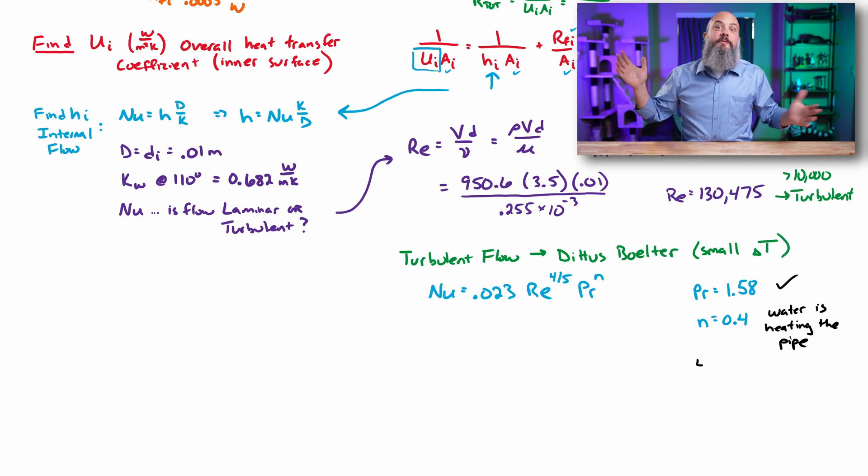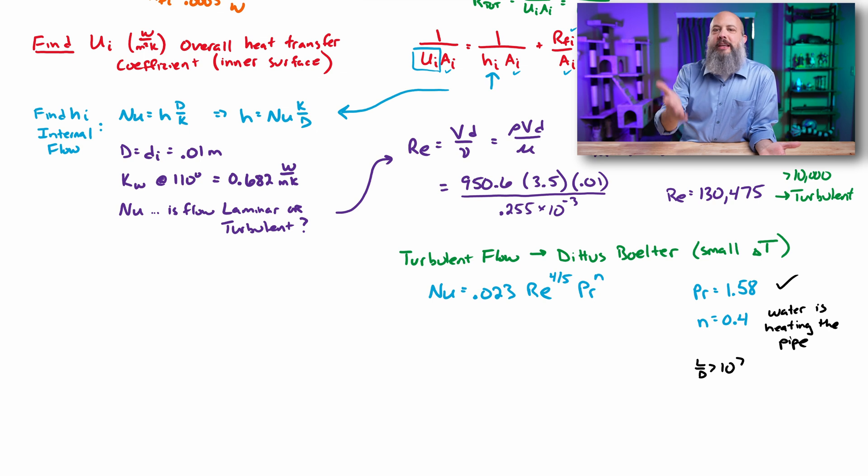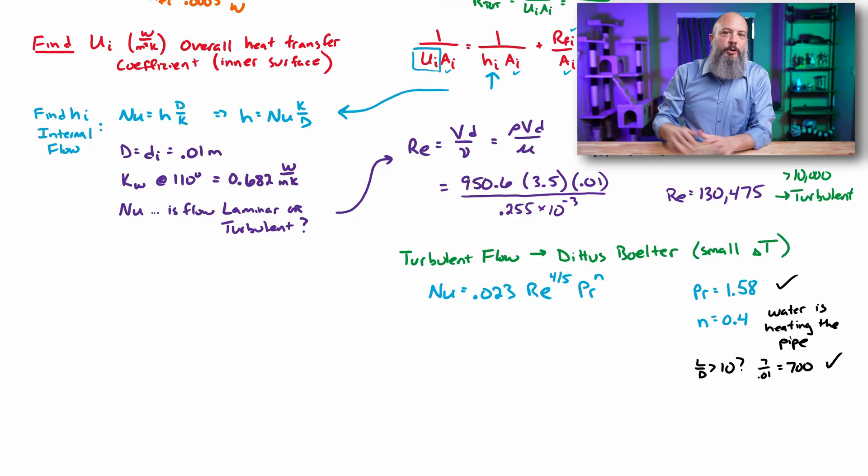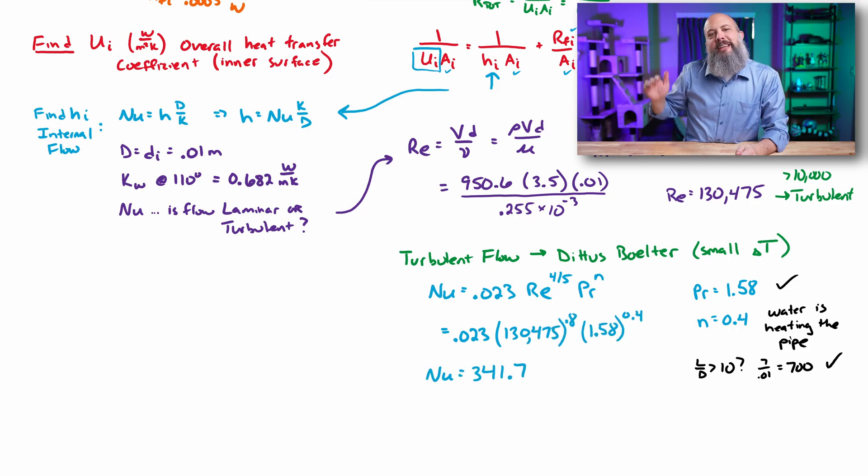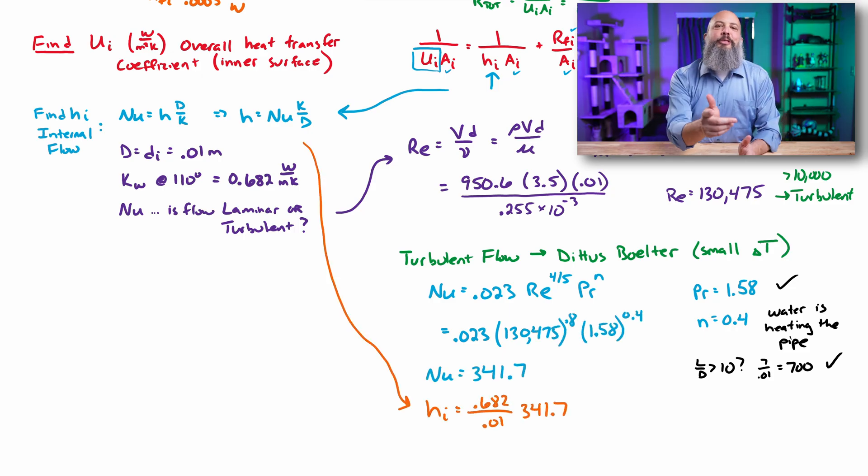The other thing we need to check to verify that we can use the Dittus-Boelter equation is whether L over D is greater than 10. And we plug in the numbers here. Yeah, we get 700. That's definitely enough. Basically, we want to make sure that the flow is fully formed. L over D means length divided by diameter, because right when fluid just enters a pipe, there's still sort of sloshing, mixing, as it's sort of getting settled in. So you want to make sure that the pipe is long enough, that it has a chance to sort of reach its steady flow condition. And with that, plug in Nusselt number 341.7, and that leads to an H value 23,000.